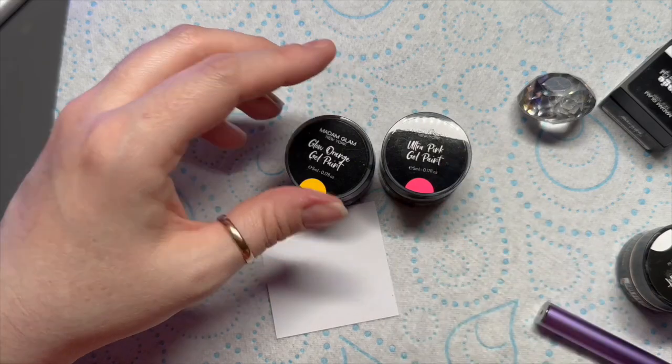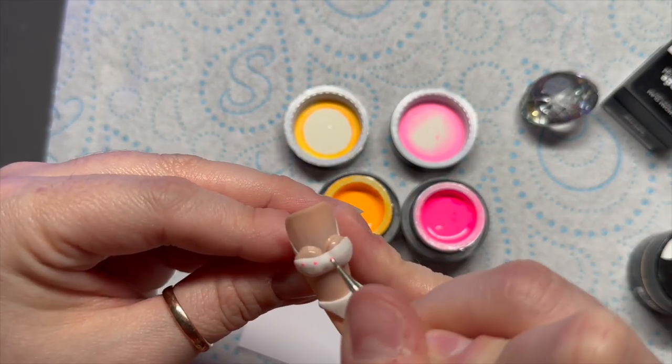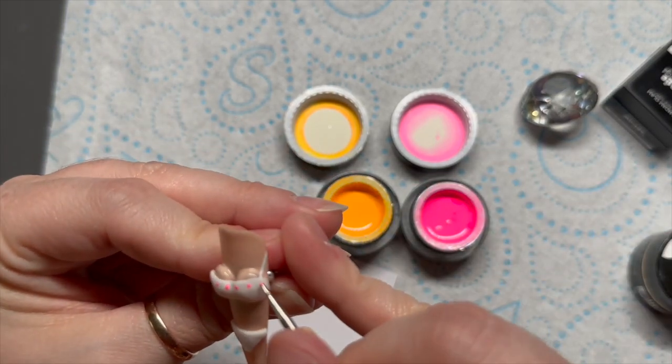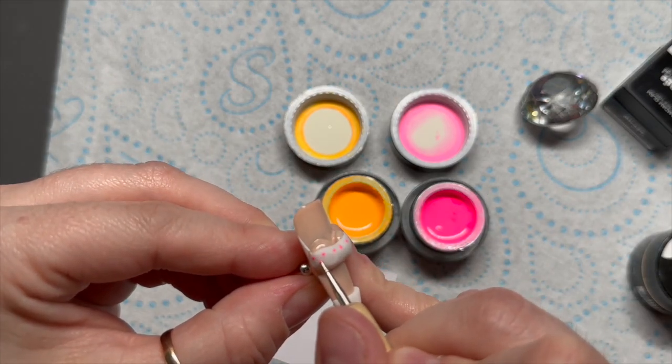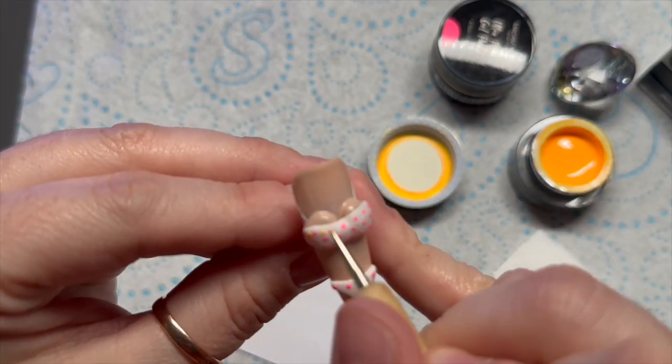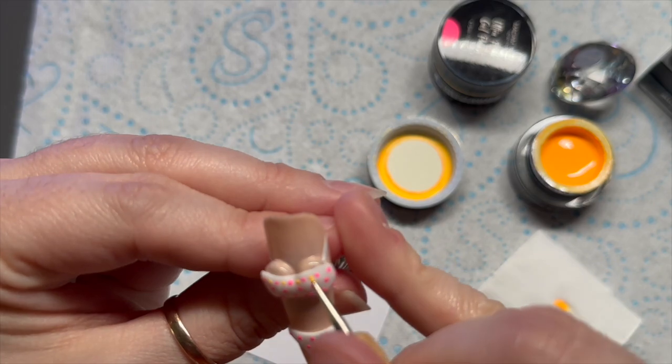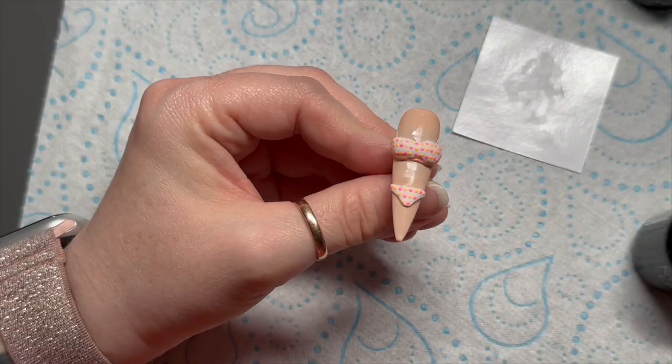Then I'm going to use Glow Orange and Ultra Pink and I'm just going to add some polka dots to the bikini. She wore an itsy bitsy teeny weenie, it's not yellow polka dot though. How old is that song? Some of you probably won't even know that song. So yeah, I'm just adding some pink and orange dots and then I will cure that for 60 seconds when they're completely covered.